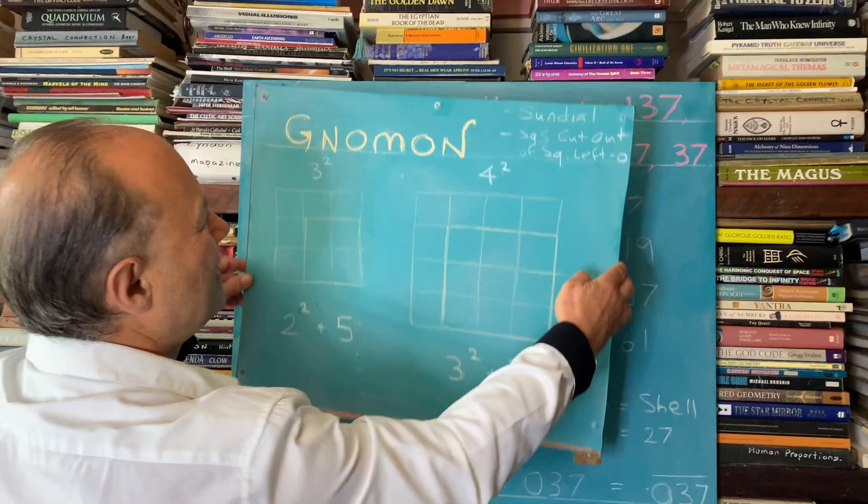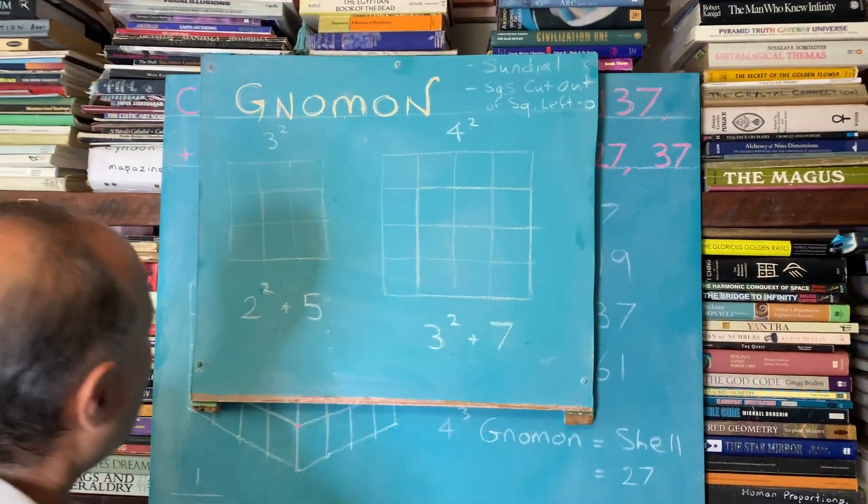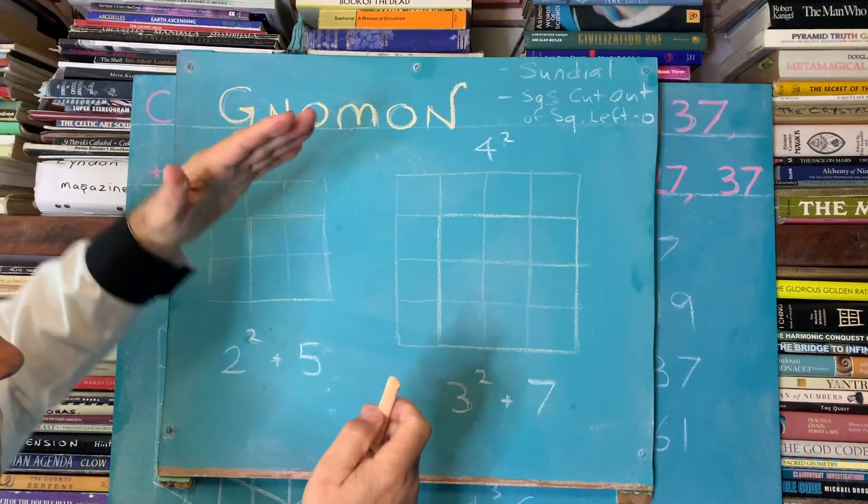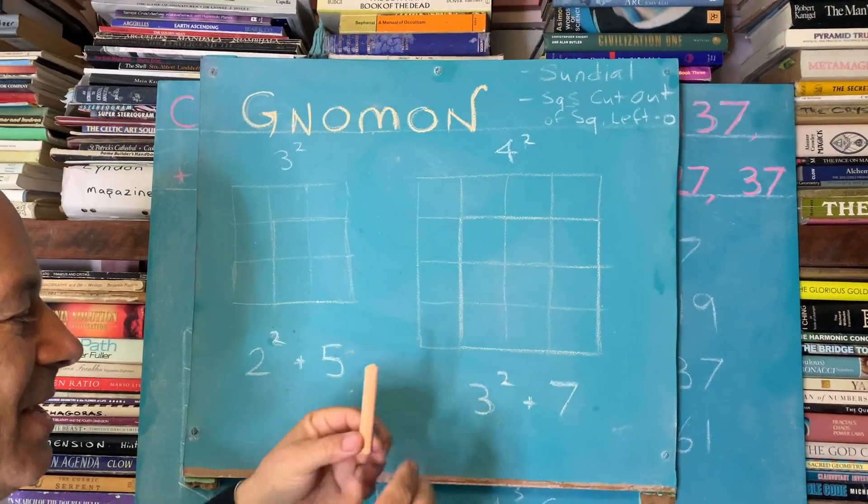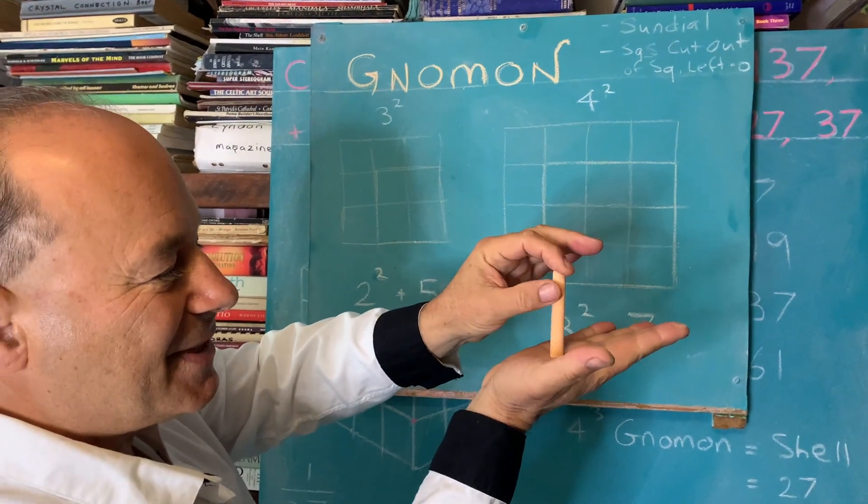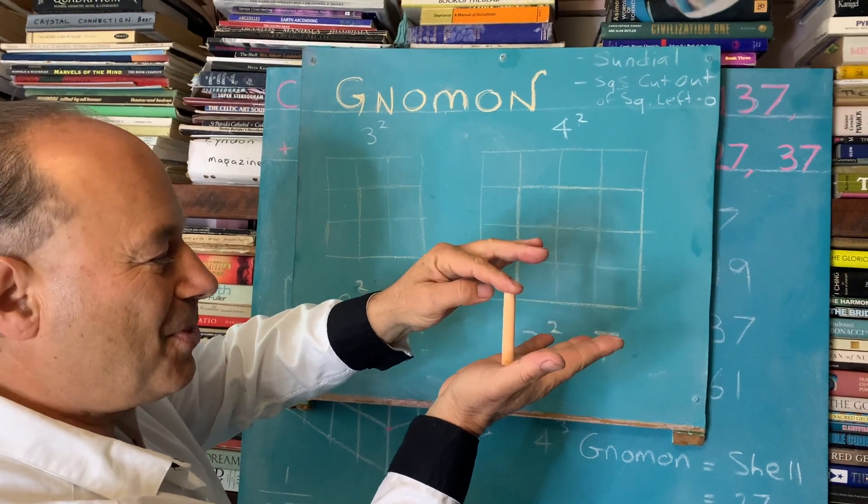So to explain what a gnomon is, I'll just do a really quick diagram. A gnomon is when you have a sundial, when the sun's shining on a plate, there's normally a vertical stick like that. So as the sun shines on the stick, it leaves a shadow. So that vertical line, that shape is called the gnomon.